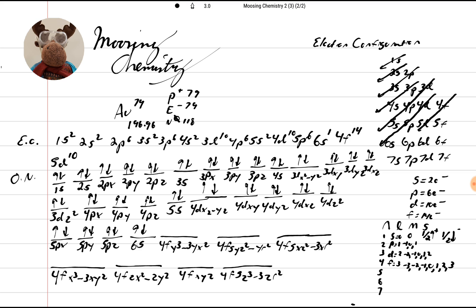So watch this — go 1, 2, 3, 4, 5, 6, 7, 8, 9, 10, 11, 12, 13, 14. That's all 14 electrons in the 4f subshell.